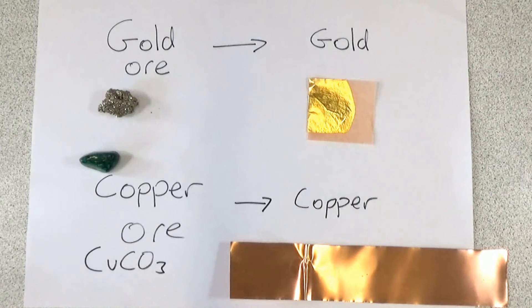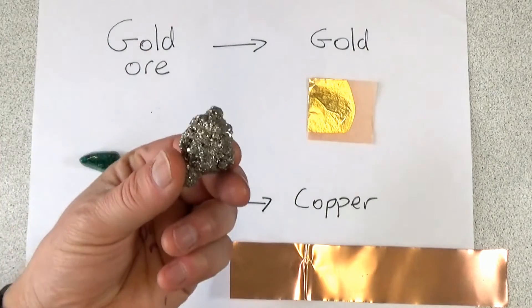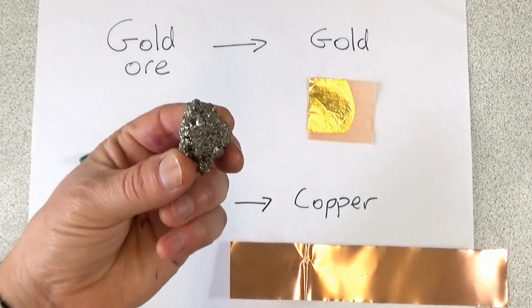The way we extract these two metals from their ores is very different though. Gold is down near the bottom of the reactivity series so it's found in the rock as the pure metal itself. We sometimes call it the native metal, it's not joined to any other elements.